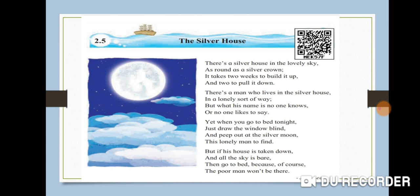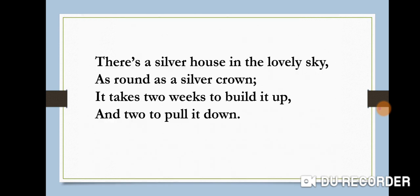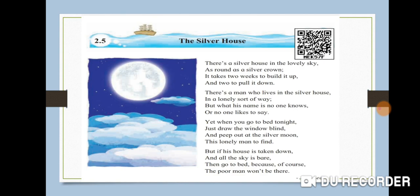Let's get started to understand the meaning of the poem. Students, when you see the poem, what have you considered? What is meant by the silver house? The silver house here is picturized on the moon.